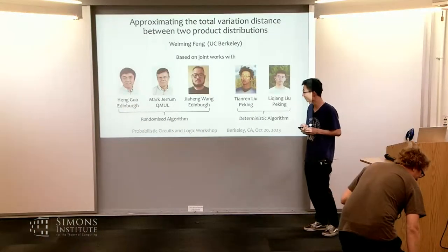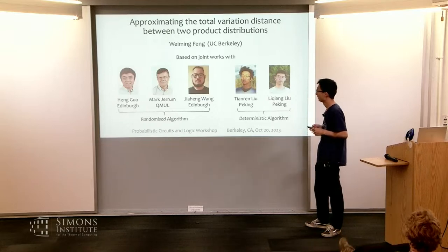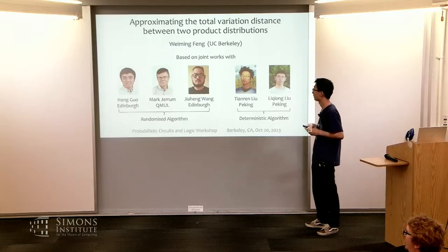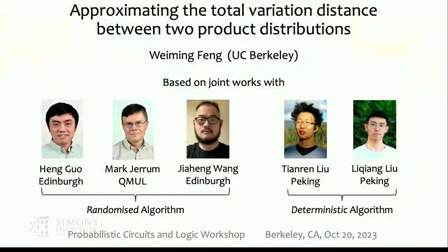Thank you for the introduction. We are talking about approximating the total variation distance between two product distributions. This talk is based on two joint works. The first is a joint work with Heng, Mark, and Zheheng — this work is on the randomized approximation algorithm. The next is a joint work with Tianren and Liqiang on a deterministic approximation algorithm. I mainly focus on the randomized algorithm, which is a very simple algorithm.